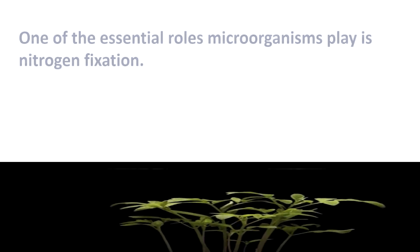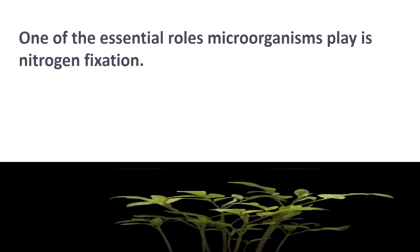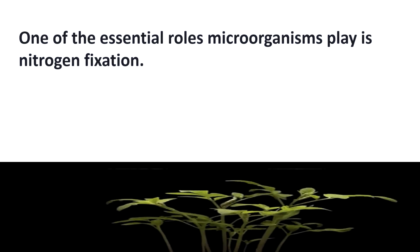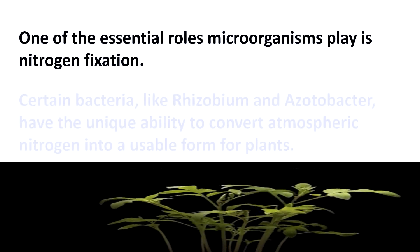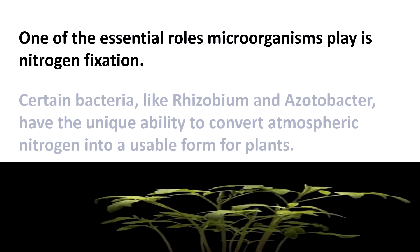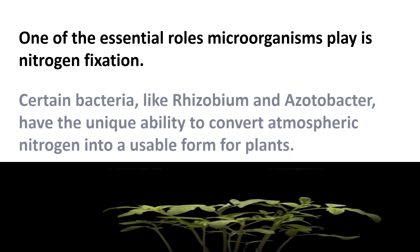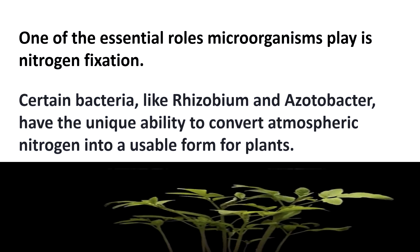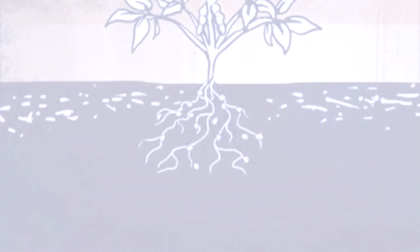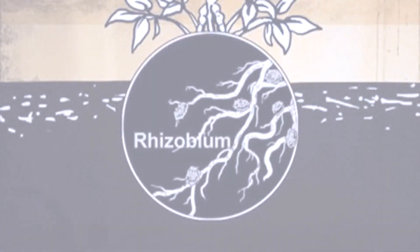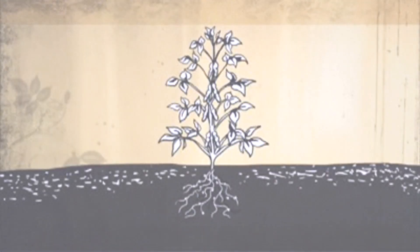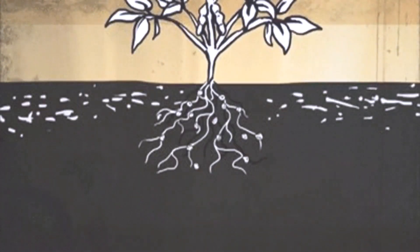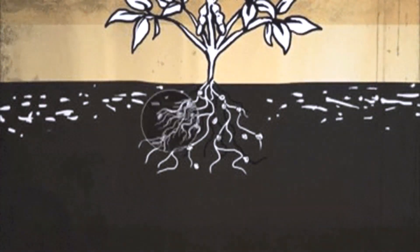Nitrogen Fixation: One of the essential roles microorganisms play is nitrogen fixation. Certain bacteria, like Rhizobium and Azotobacter, have the unique ability to convert atmospheric nitrogen into a usable form for plants. By forming symbiotic relationships with leguminous plants, these bacteria provide them with the vital nutrient, nitrogen, promoting healthy plant growth.